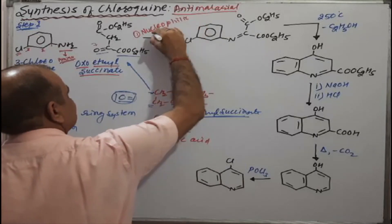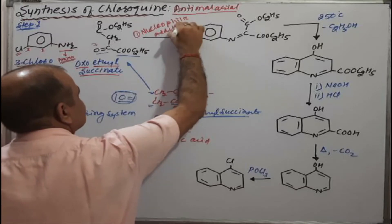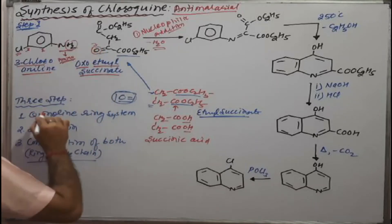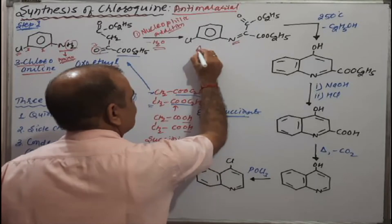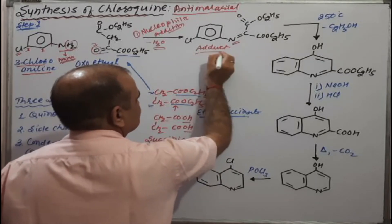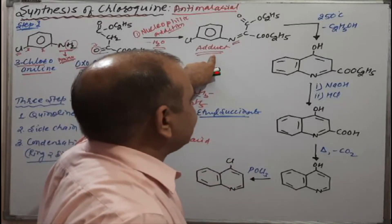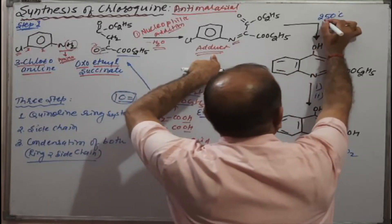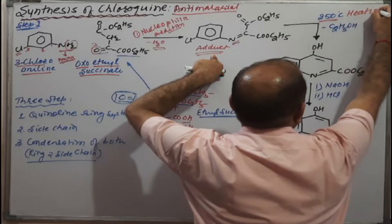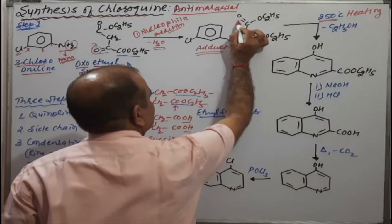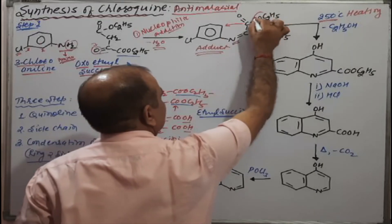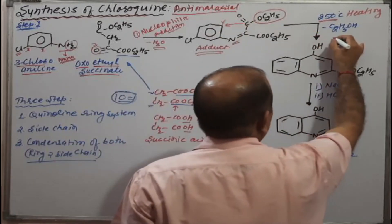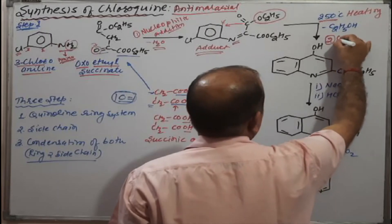This is a nucleophilic addition reaction. The amino group of 3-chloroaniline and the carbonyl functional group of oxo-ethyl succinate undergo nucleophilic addition. After the reaction, water (H2O) is removed — oxygen and hydrogen are eliminated — giving a double bond, forming the adduct product. That adduct product is then heated at 150°C, causing cyclization and removal of the ethoxy group, resulting in ring closure.